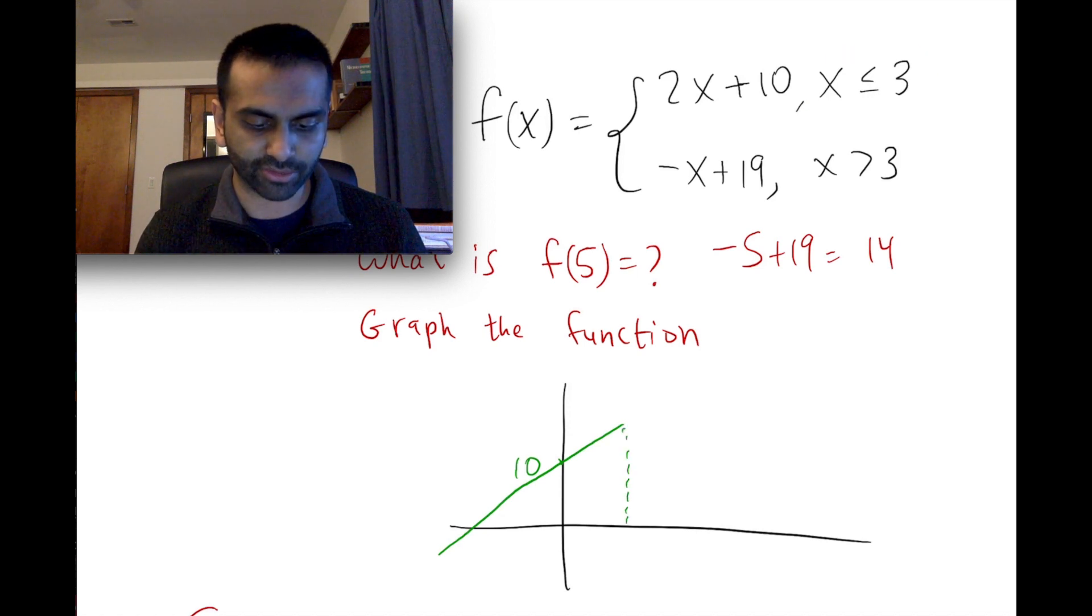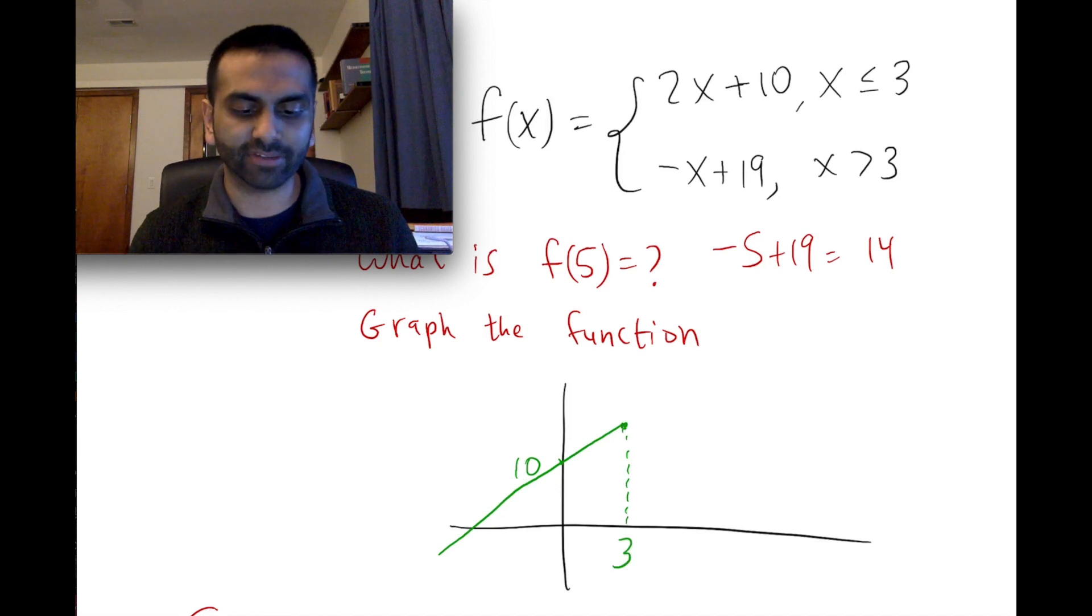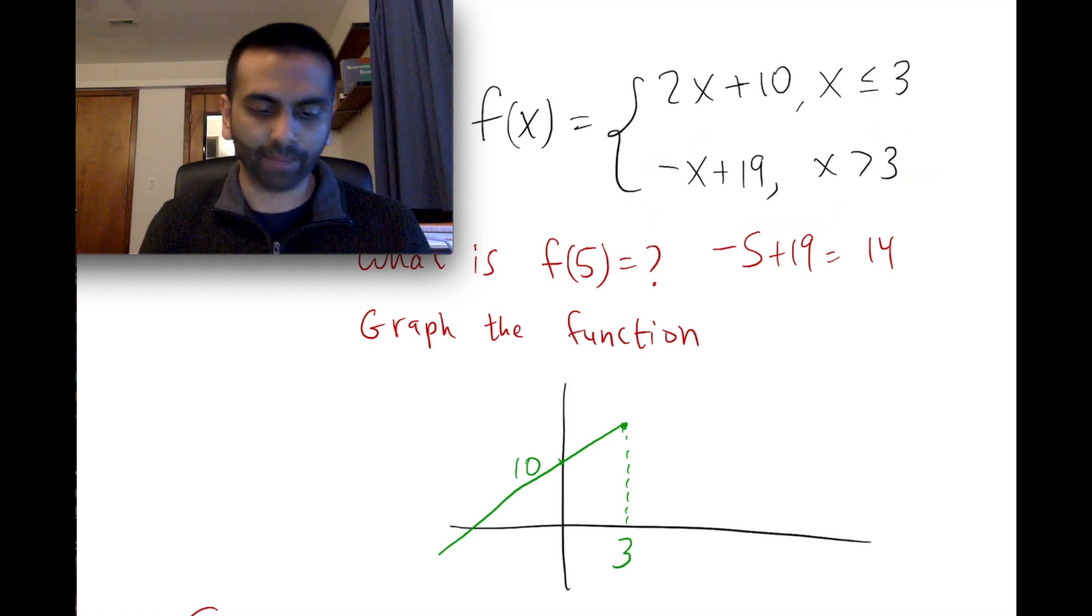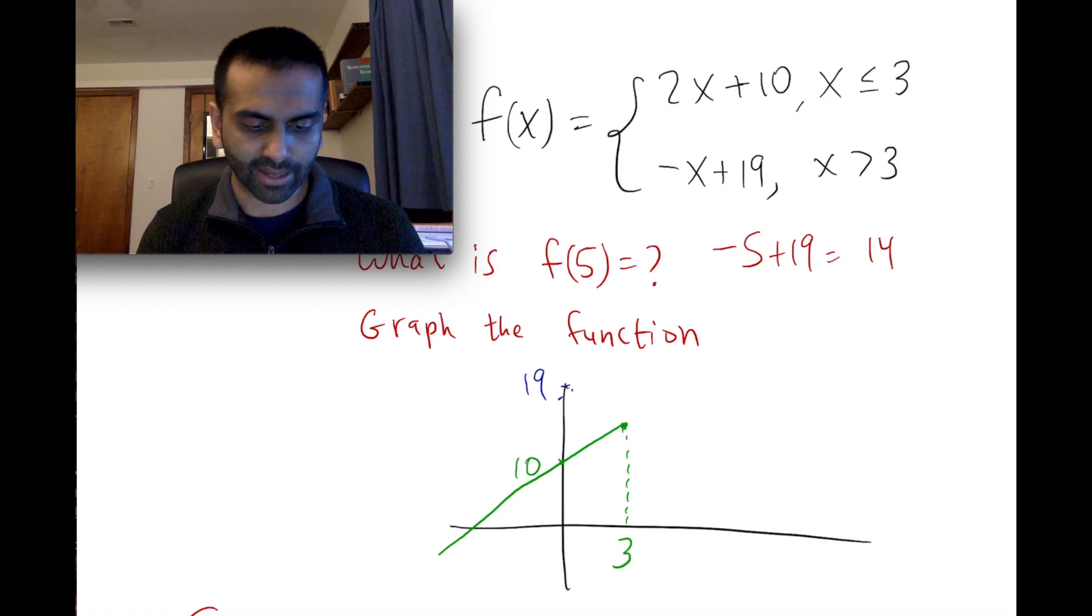So at 3, here now we stop and we now instead graph this downward sloping line. Now it might help to first think about what is this downward sloping line. It starts at 19 and then its slope is negative 1, so it's going down and basically at x equals 3, this guy's going to be at 16.